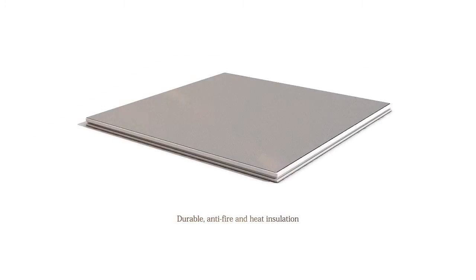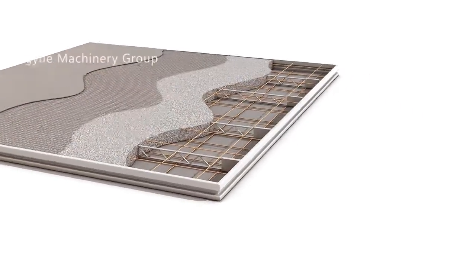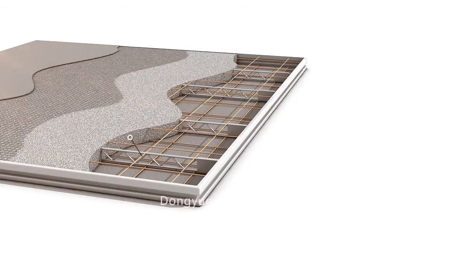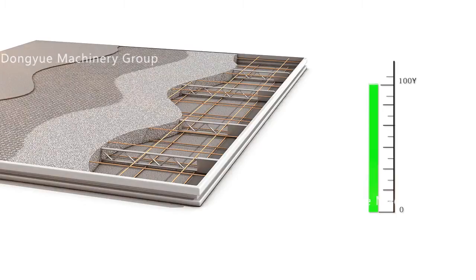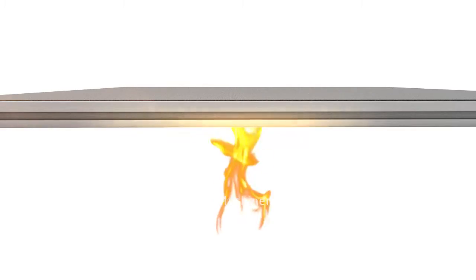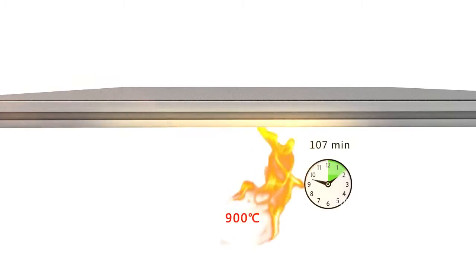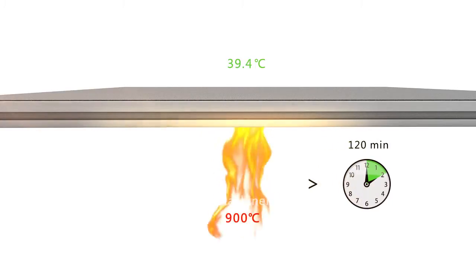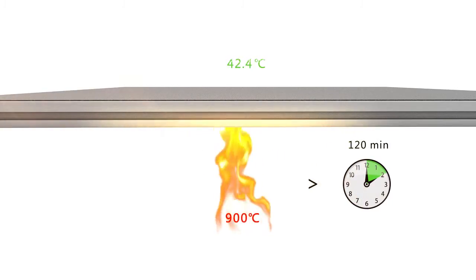Durable, anti-fire, and heat insulation. The Nanocomposite Panel is mainly composed of sulfur cement and steel structure. The service life of the product is more than 100 years. The duration of fire resistance is more than 2 hours. The average temperature of the back face is less than 45°C after being baked at 900°C for more than 120 minutes.